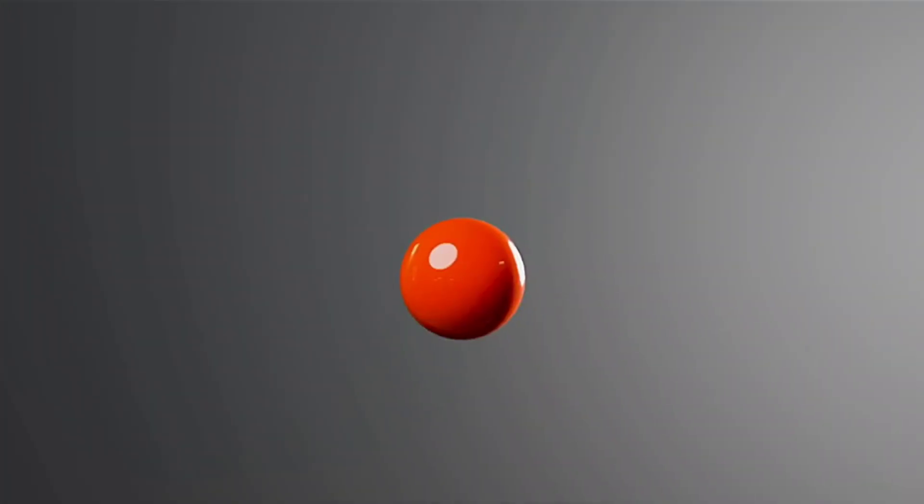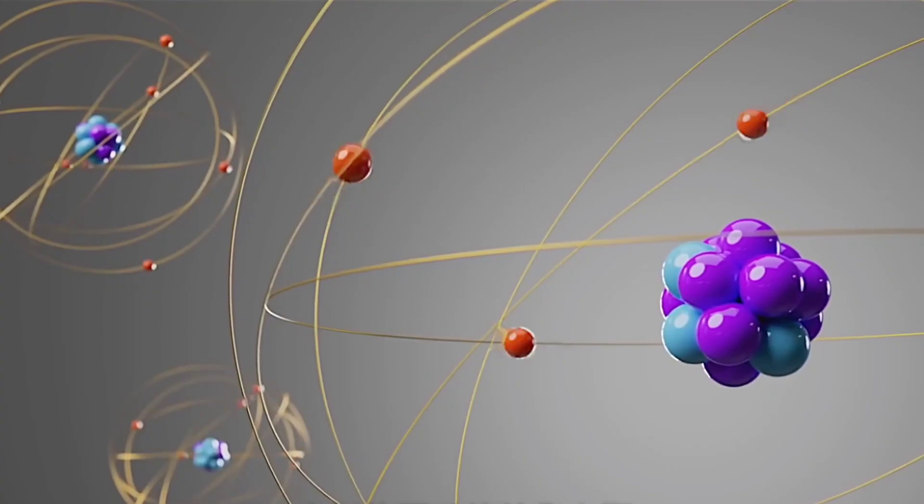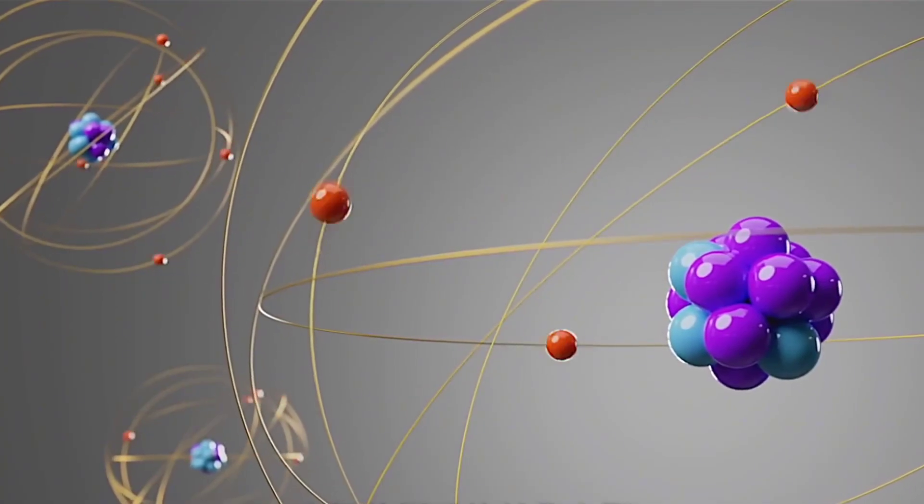Imagine an atom as a solar system. The nucleus in the middle is like the sun, and the electrons around it are like the eight planets.